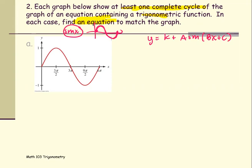Starting with a, a is the amplitude. The amplitude is one half multiplied by the max minus the minimum value. In this case, the max is 1, the minimum is negative 1.